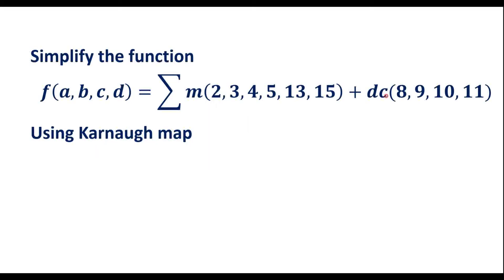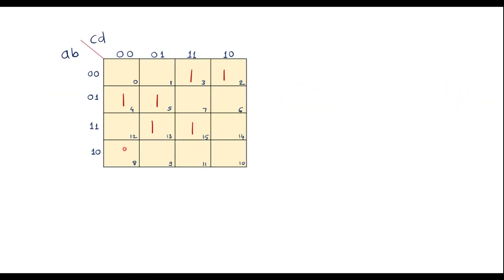Then we have the don't cares. In these cell numbers, we have to consider don't cares. That is 8, 9, 10, 11. Don't cares are represented by x: 8, 9, 10 and 11. In other cells, we have to write 0.